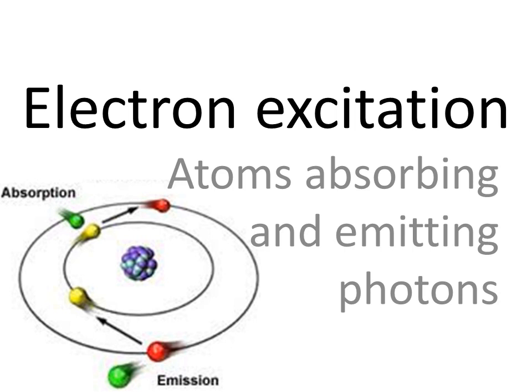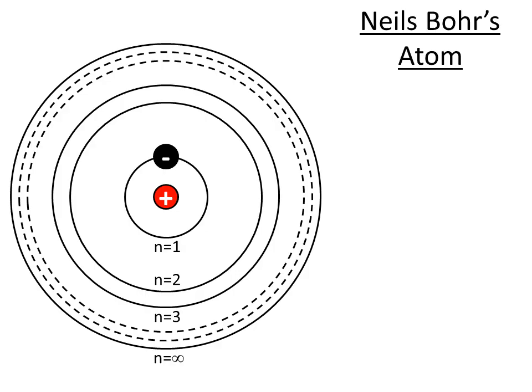A quick video going through electron excitation and how atoms absorb and emit photons. We'll start off with the Niels Bohr atom. This is really the foundation of this whole idea. This is the Niels Bohr atom called hydrogen.